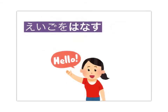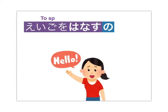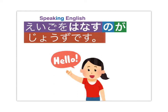Another example: Eigo wo hanasu — to speak English. We'll put no after it, which turns it into 'speaking English.' Add ga, and then follow with whatever detail you'd like — jōzu desu. Eigo wo hanasu no ga jōzu desu: I'm good at speaking English.